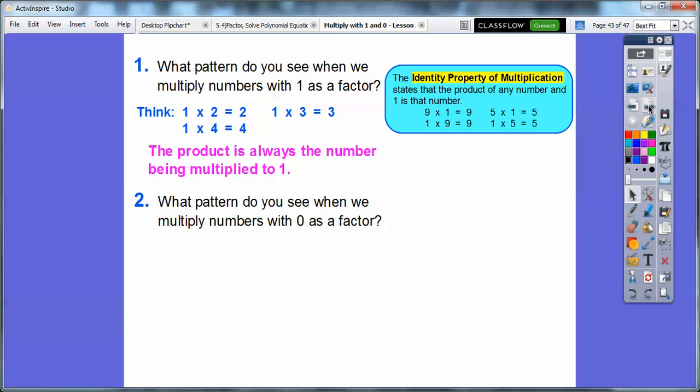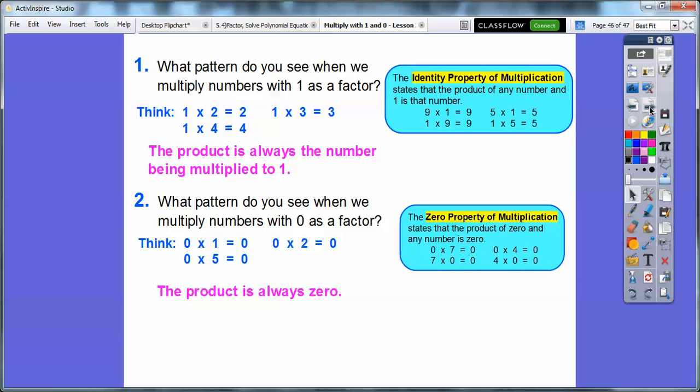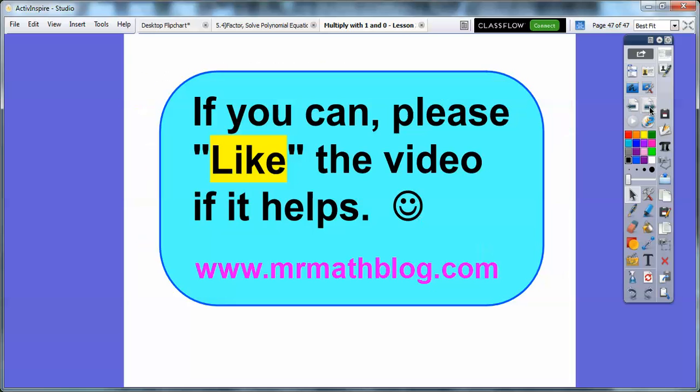So what pattern did we see when we multiplied a number with zero? Remember, it always gave us zero. Zero times one equals zero. Zero times five equals zero. Zero times two also equals zero. So the product is always zero when we multiply by zero. The zero property of multiplication just states that the product of zero and any number is zero, no matter what.